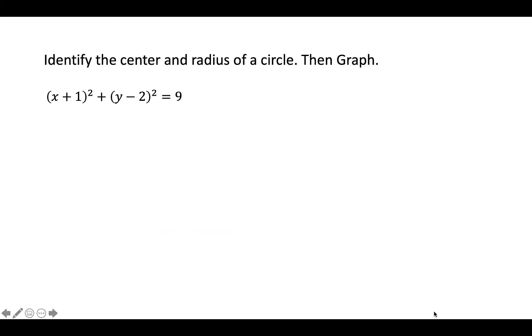First of all, we have an equation of a circle given in standard form written as (x + 1)² + (y - 2)² = 9. Now let's recall the main equation in standard form as (x - h)² + (y - k)² = r².